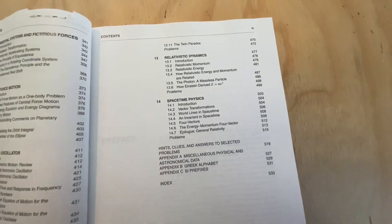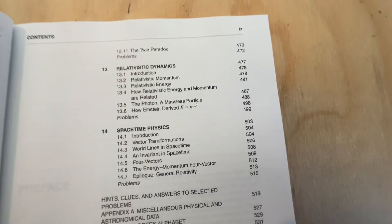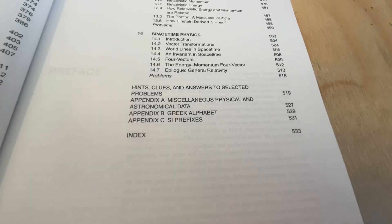So the last few chapters I feel like are sort of more of an optional thing. Some courses might cover it, some might not. Yeah, it covers things like world lines, four vectors and that kind of stuff.